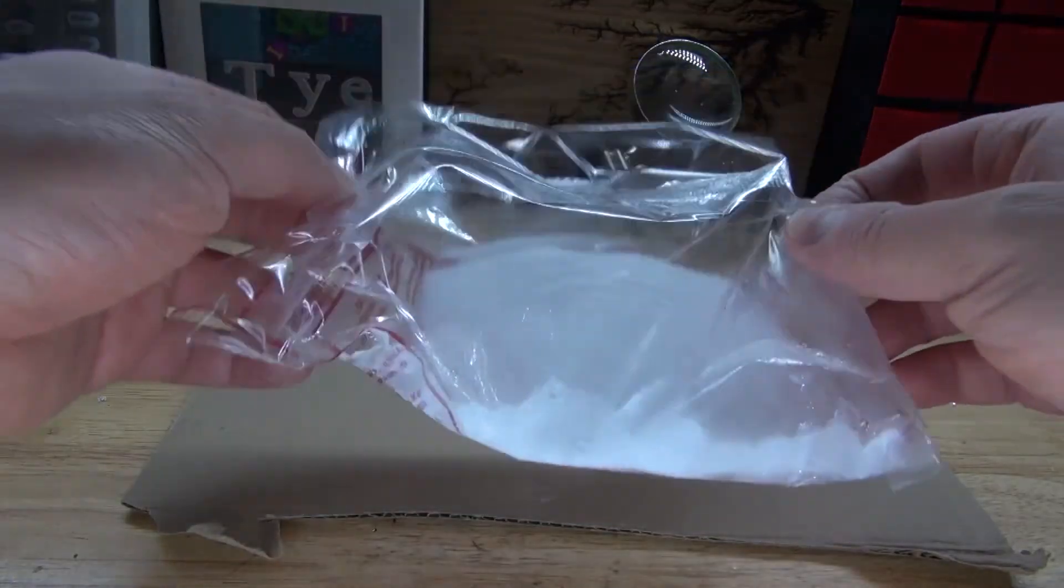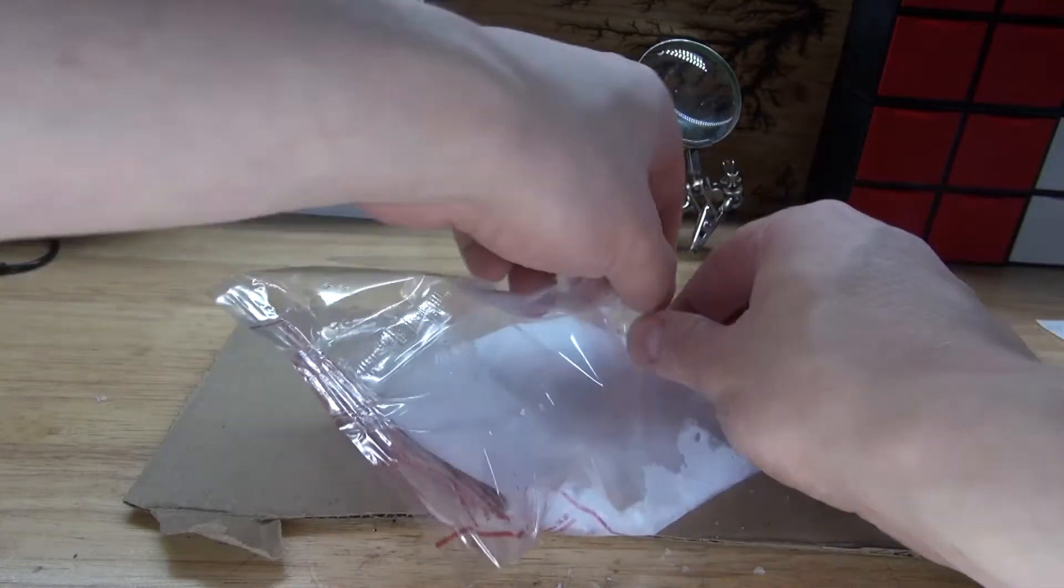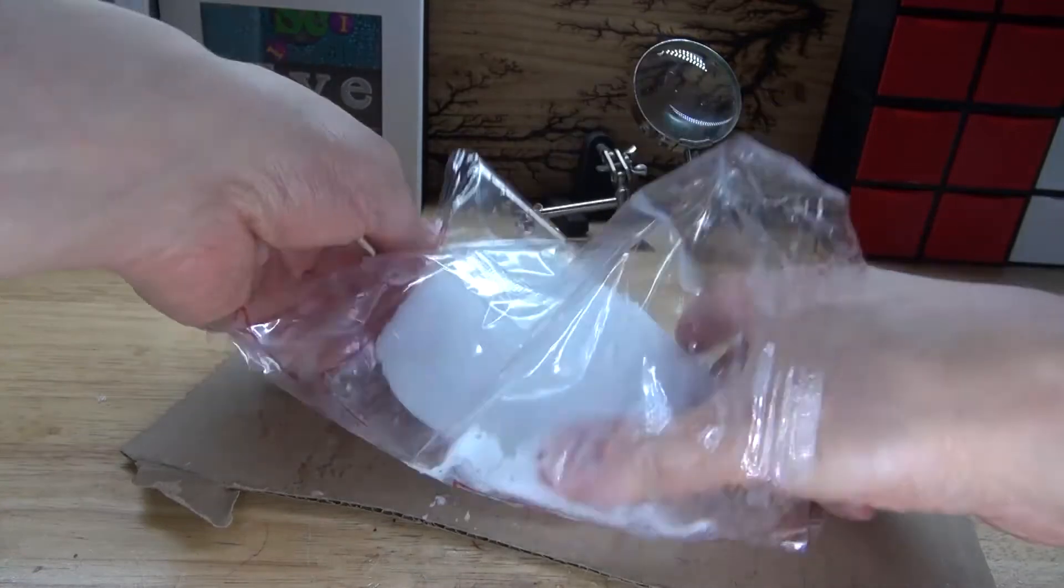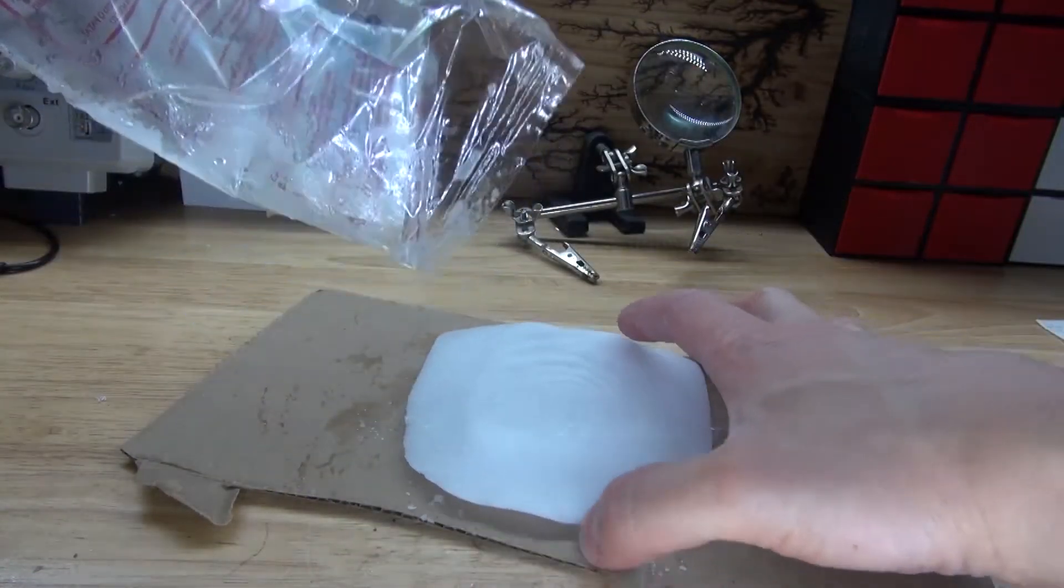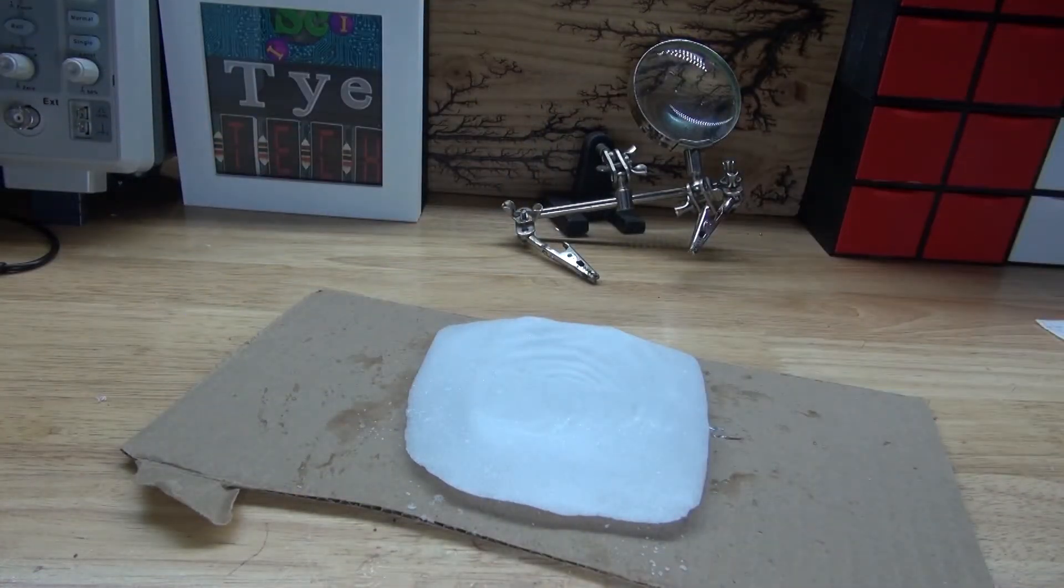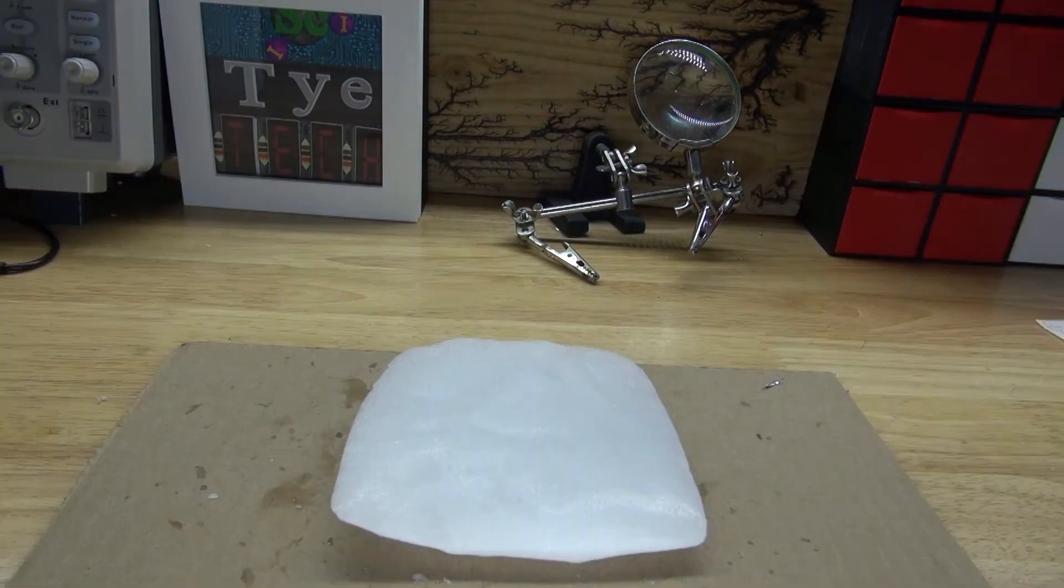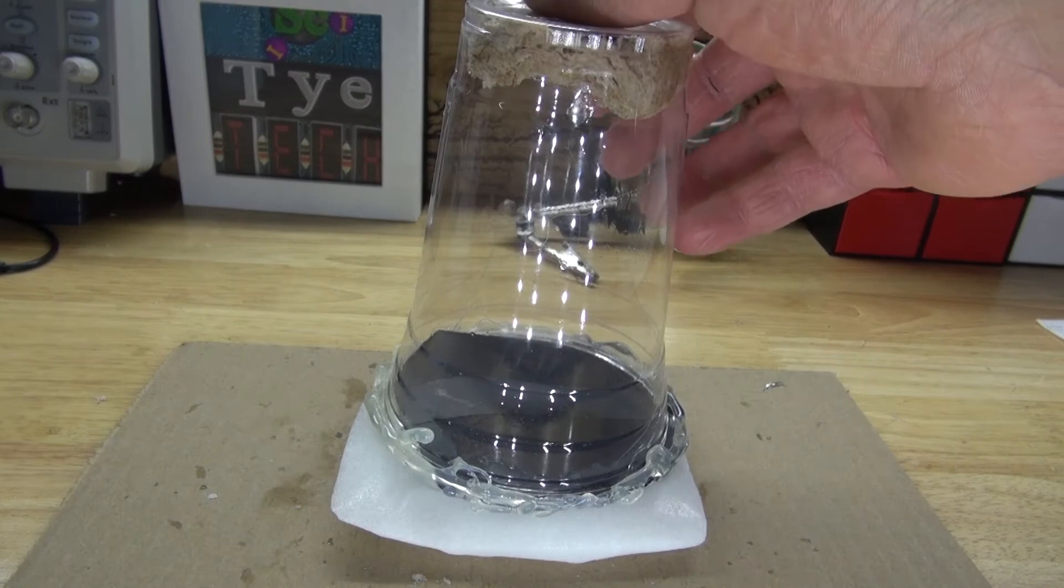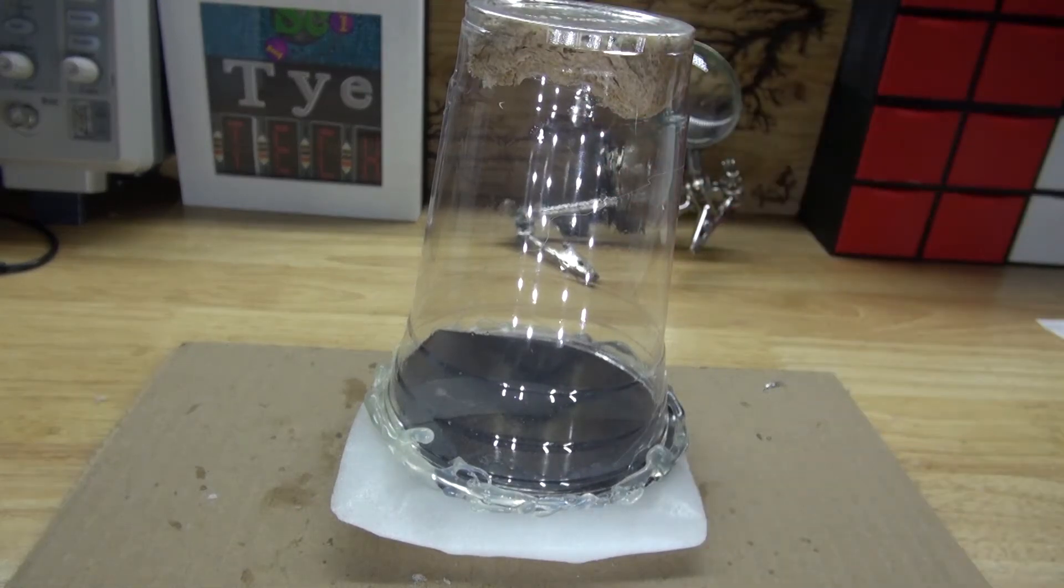I have right here, this block of dry ice. Remove it from this package. Place it on top of the cardboard. And now go ahead and place the chamber on top of the dry ice and wait approximately 30 minutes for it to cool down. Doing this will allow the isopropyl alcohol vapors to condense into a cloud.